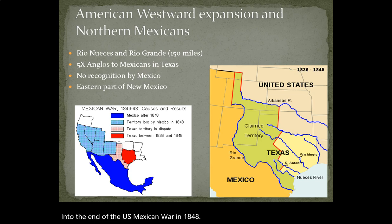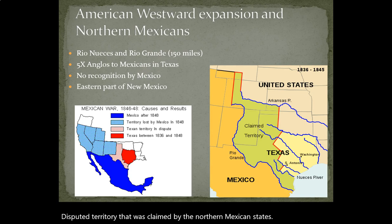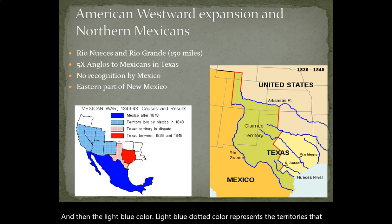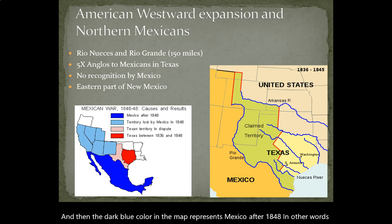The red dotted area on the map represents disputed territory claimed by northern Mexican states south of Texas, including Nuevo Mexico, Tamaulipas, Coahuila, and Nuevo León. The light blue dotted color represents the territories lost by Mexico in 1848. The dark blue color represents Mexico after 1848. In other words, Mexico loses about half of its territory to the United States as a result of this war.